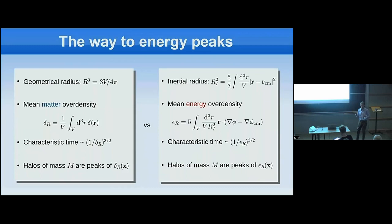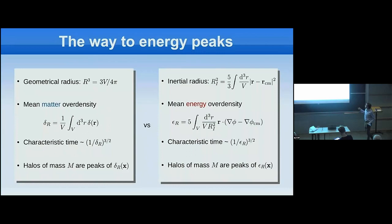Dark matter halos are by definition the regions that collapse the fastest. Looking for halos of mass M is equivalent to looking for peaks in the initial conditions of the matter density field smoothed on the Lagrangian radius scale. Alternatively, one can consider the inertial radius r_i, related to the trace of the inertia tensor. This radius comes with an associated over-density quantity — not the mean matter over-density, but the mean energy over-density.